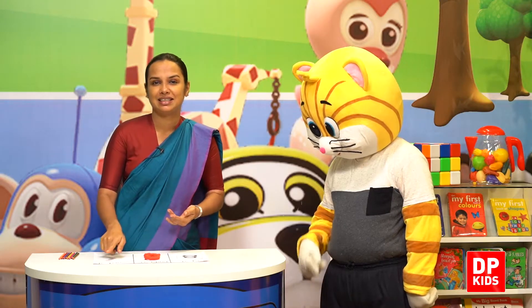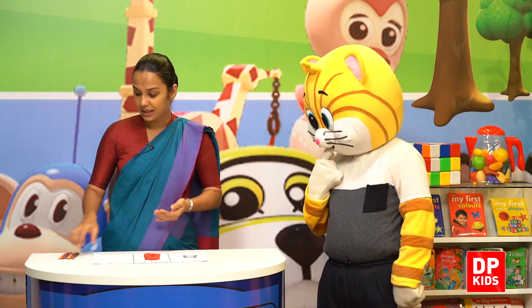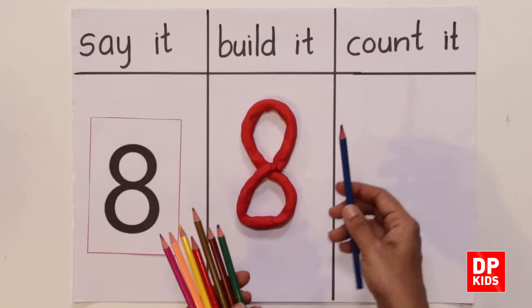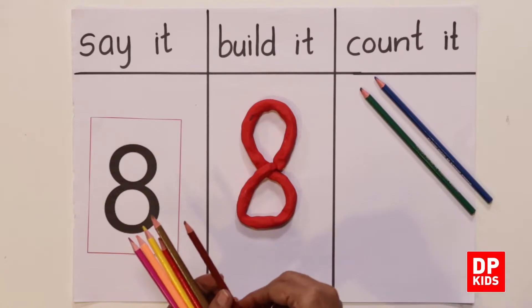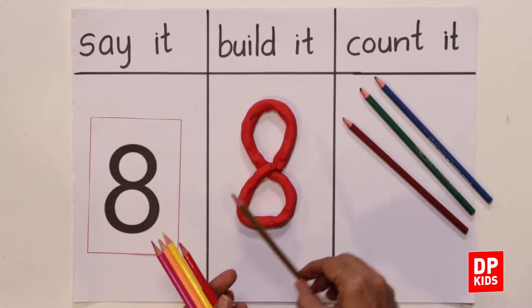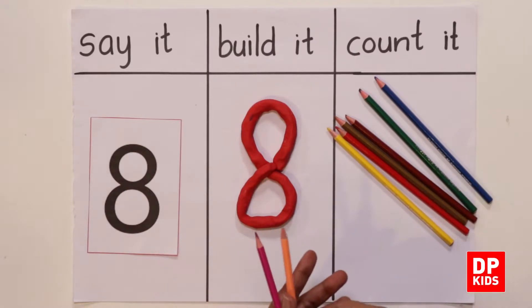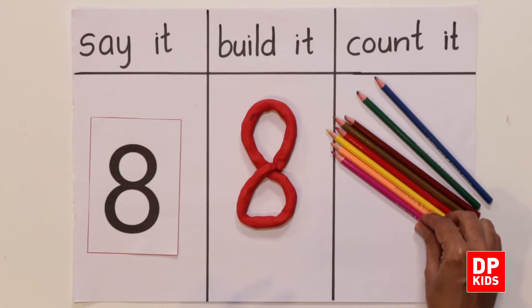Next is count it. I have brought some color pencils. There are lots of colors here. Shall we count? Yes. Kitty, count. One, two, three, four, five, six, seven and eight. How many color pencils? Eight color pencils.